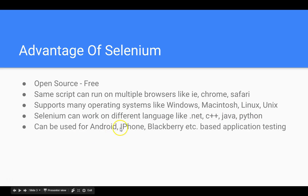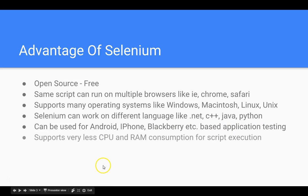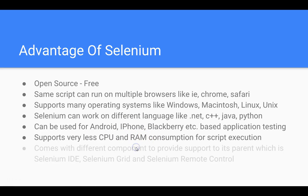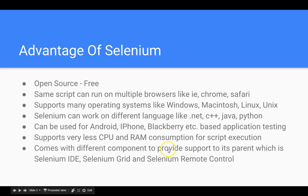Selenium can be used for Android, iPhone, BlackBerry, and other application testing. It supports very low CPU and RAM consumption for script execution — this is a very important point compared to UFT. When you run UFT scripts, you won't be able to do anything else on the machine. Selenium also has different components to provide support: Selenium IDE, Selenium Grid, and Selenium Remote Control — we are going to see all these things afterwards.